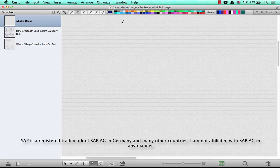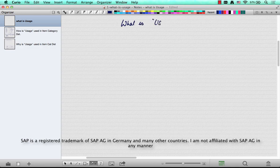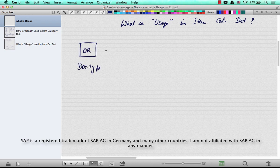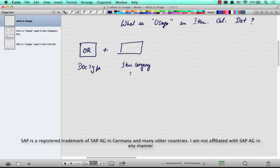Okay, the first question on usage is: what is usage in item category determination? Now we all know item category at the sales document type level is based on four parameters. Document type, say OR for example, item category group - this is norm or in the IS or ERL, any of those item category groups, and the third is usage.